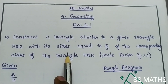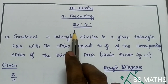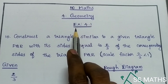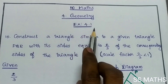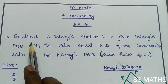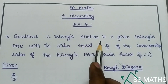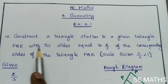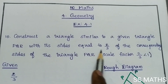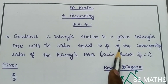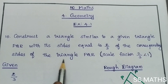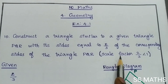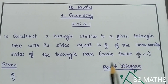Hi students, I am Prima Thangaraj. 10th Maths, chapter 4, Geometry, exercise 4.1, question number 10. Construct a triangle similar to a given triangle PQR with its sides equal to 2 by 3 of the corresponding sides of triangle PQR. The scale factor is 2 by 3, which is less than 1.